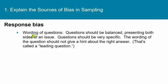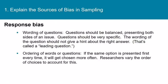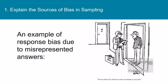Another source of response bias is the wording of questions, and this is a very big problem. Questions have to be balanced, presenting both sides of an issue, and should be very specific. The wording should not hint at the right answer — if it does, that's called a leading question, and that's never acceptable. The ordering of words or questions is also important: if the same option is presented first every time, it will get chosen more often. Researchers vary the order of choices to account for this.